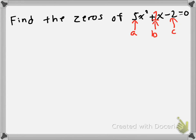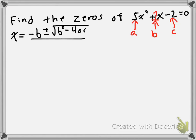So, let's start by writing out the quadratic formula. Remember, the quadratic formula goes like this: x is equal to negative b plus or minus the square root of b squared minus 4ac, and all of that is being divided by 2a.